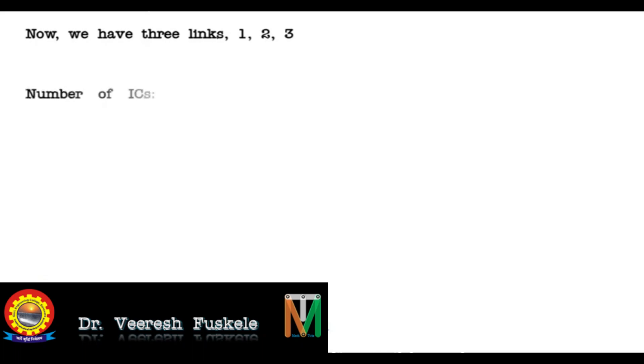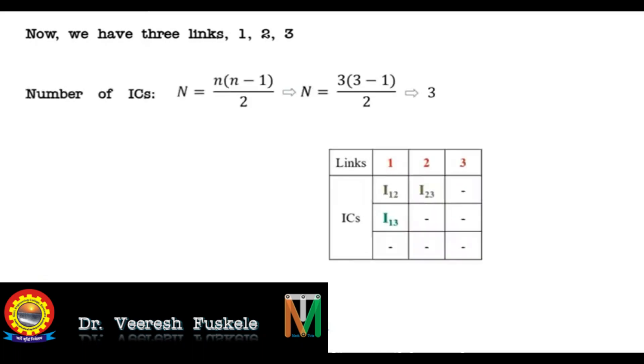Now as we have three links — link number 1, 2, and 3 — as per the formula, the number of instantaneous centers is n(n-1)/2, which gives us a total number of instantaneous centers as 3. So they are listed as i12, i13, and i23.